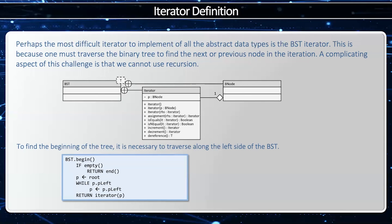The iterator refers to a single binary node. Notice how the iterator has a member variable called p whose data type is a binary node. It is related to the binary node through association, which means it doesn't contain a copy of the binary node, but rather a reference to it or a pointer to it. And of course, the binary node is a nested class within the BST.